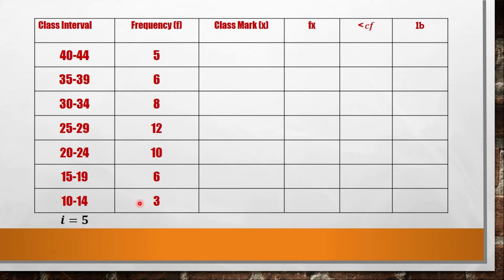The frequency is given and what we're going to do is find the summation. When we say summation, that's the total sum: 5 plus 6 plus 8 plus 12 plus 10 plus 6 plus 3, you have 50. Now for the class mark, this will rely on the class interval. Look at what's in the middle: 40 and 44. 40 plus 44 divided by 2, that's 42. You do it to the other class intervals: 35 plus 39 divided by 2 is 37, then 32, 27, 22, 17, and 12.